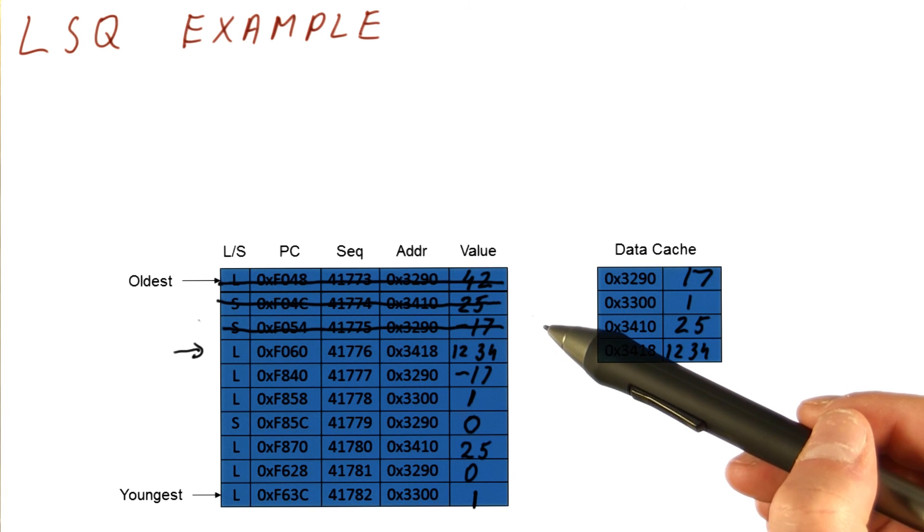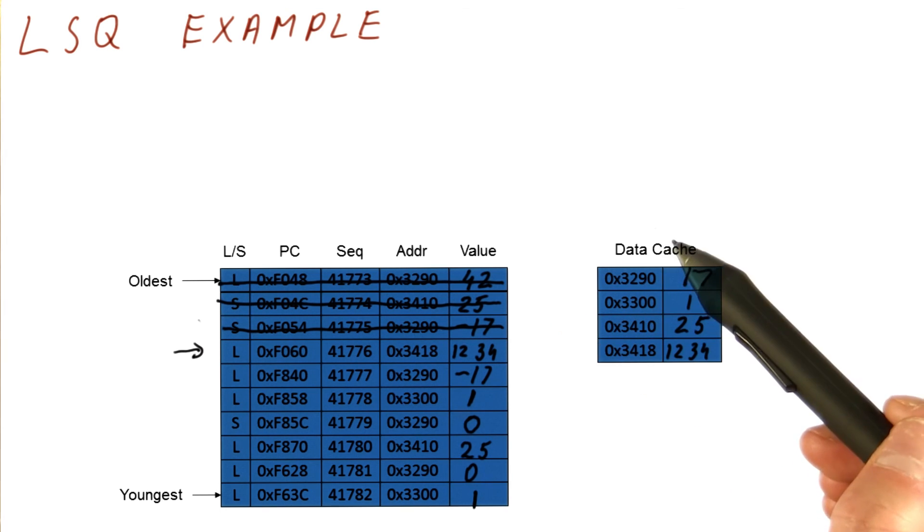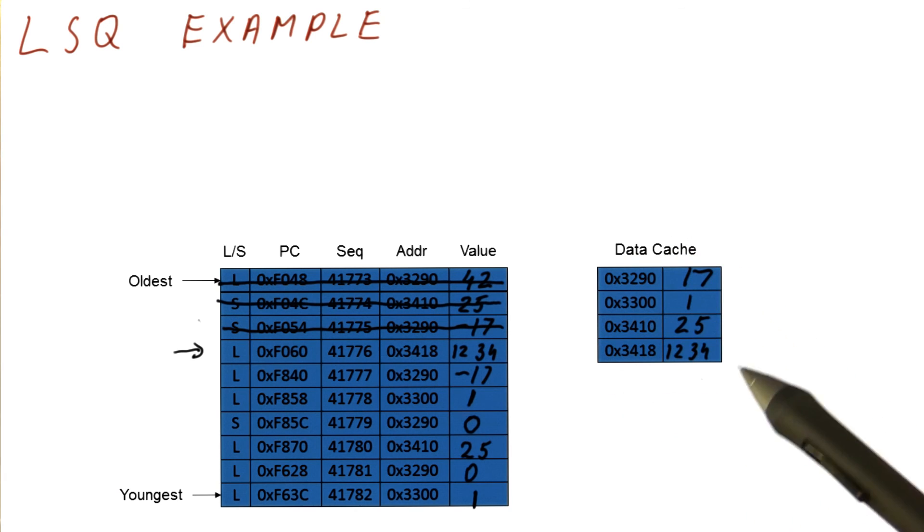So just like we had our architectural register file, and we were copying values on commit into it for registers, so that at any given time we know exactly what the committed registers value are. Similarly, at any given time, we have in our data cache and memory exactly what is there as of the commit point.